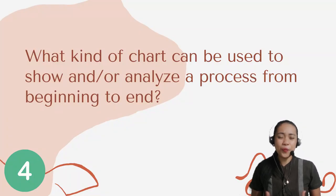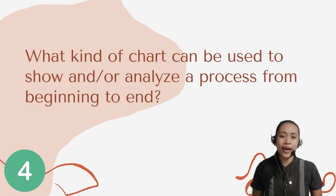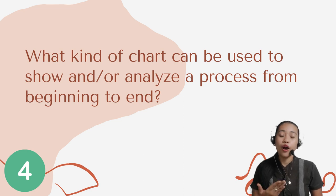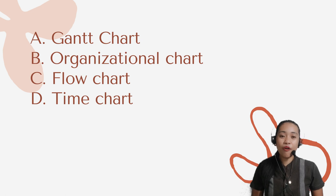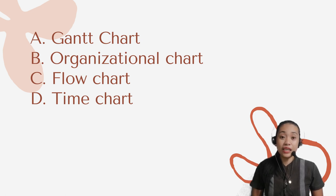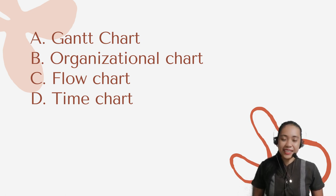Question number 4. What kind of chart can be used to show and/or analyze a process from beginning to end? A: Gantt chart. B: Organizational chart. C: Flow chart. D: Time chart.